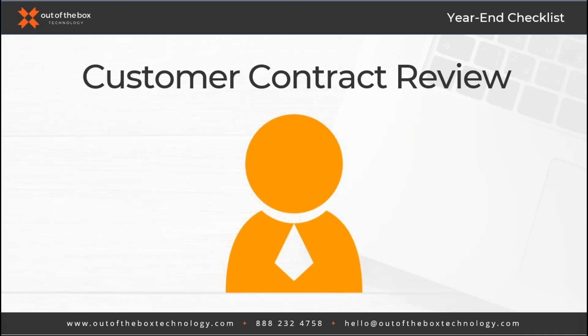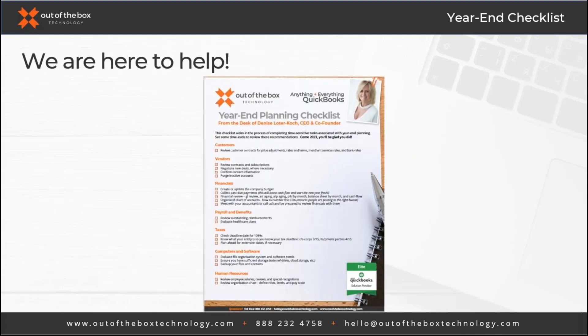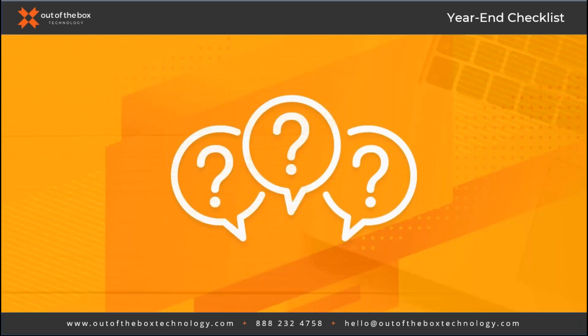That brings us to the end of our checklist — we covered a lot. We want you to know we are here to help. Up on the screen is a year-end planning checklist that our CEO and co-founder Denise Litter Cook put together, which we based our presentation on today. Everyone will be getting a copy of this interactive PDF where you can check the little checkboxes as you go and make copies — that's our gift to you today. We'll now open it up for questions and do our drawing in just a few minutes.